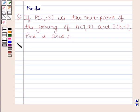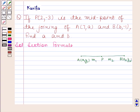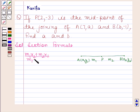Now let us begin with the solution. First of all, we should know the section formula. In the section formula, the coordinates of point P dividing the line segment joining points A and B internally in the ratio M1 to M2 are given by: x = (M1·X2 + M2·X1) / (M1 + M2) and y = (M1·Y2 + M2·Y1) / (M1 + M2).